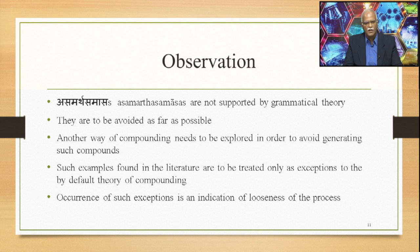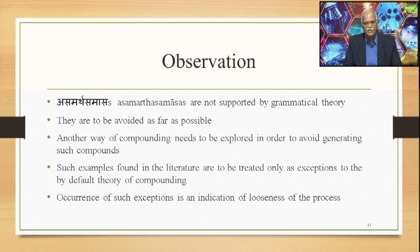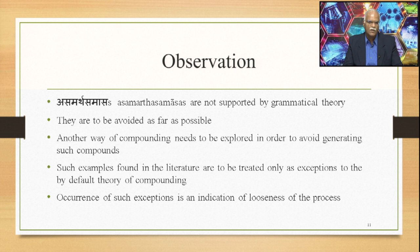The observation is that Asamartha Samasas are not supported by grammatical theory. They are to be avoided as far as possible when generating a compound. Another way of compounding needs to be explored in order to avoid generating such compounds. Such examples found in the literature are to be treated only as exceptions to the by-default theory of compounding, and not as the by-default theory itself. Occurrence of such exceptions is an indication of looseness of the process at the cognitive level.